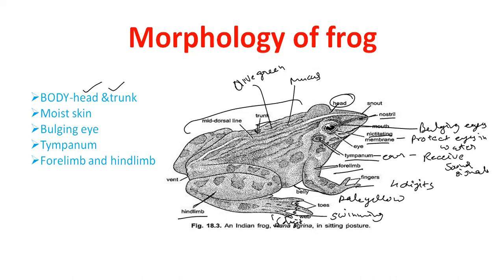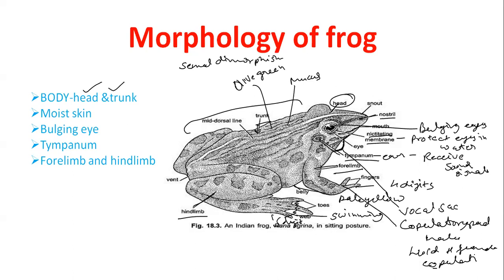The frog shows sexual dimorphism, means you can differentiate between male and female. So how you identify the male and female? Male have pouch-like structure called vocal sac. Also, below the first digit of forelimb they have copulatory pad. This copulatory pad helps male to hold the female during copulation. So male have vocal sac and copulatory pad.